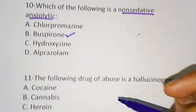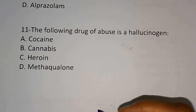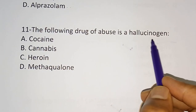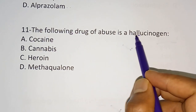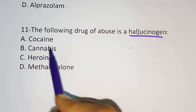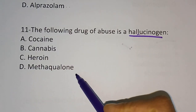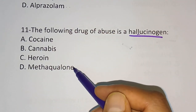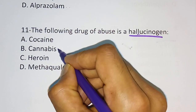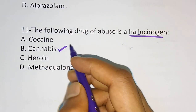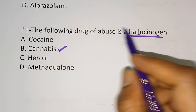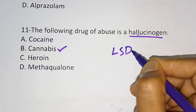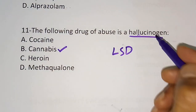Question 11, the last question: Which of the following drug of abuse is a hallucinogen? Options are: cocaine, cannabis, heroin, methaqualone. The correct answer is option B, cannabis. Tetrahydrocannabinol falls under this category. Cannabis is a hallucinogen. Another example is LSD, which is also a hallucinogen.